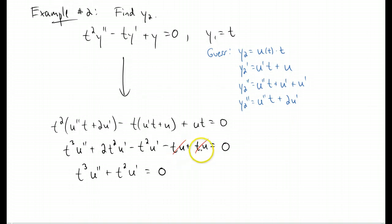And now, because these u terms canceled out, we can actually make a tricky substitution to reduce the order of this differential equation. I'm going to use the substitution v is u prime. If we do that, we get t cubed v prime plus t squared v equals zero. And now, we've reduced the order from a second order differential equation to a first order differential equation.